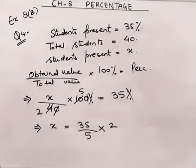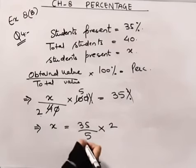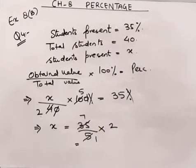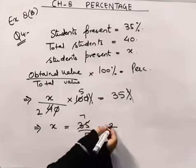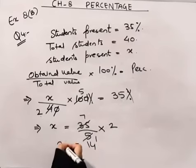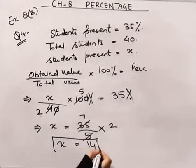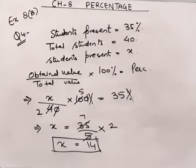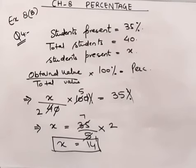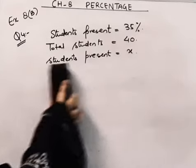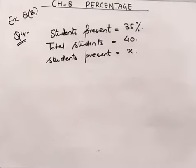Multiplying: 5 times 7 is 35, and 7 times 40 gives us 14. So 14 students were present in the class. But that is not the final answer — the question is asking for the number of students absent on that day.